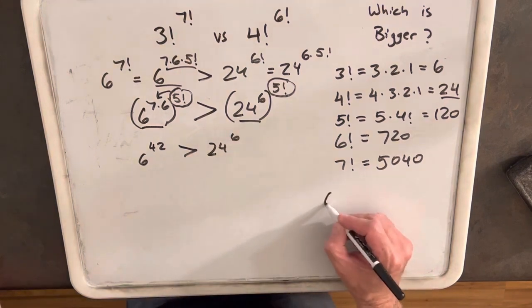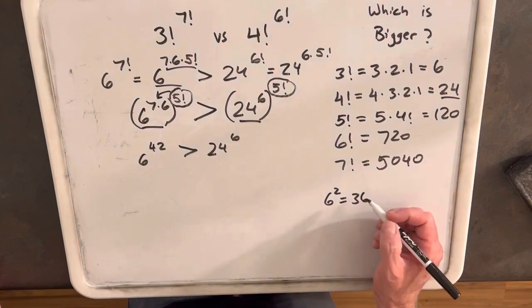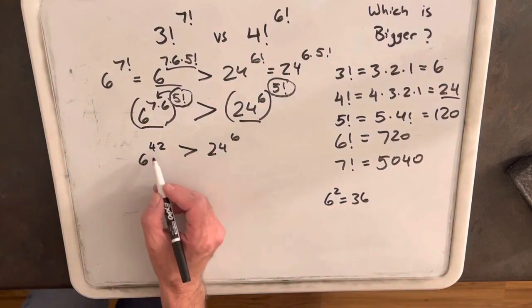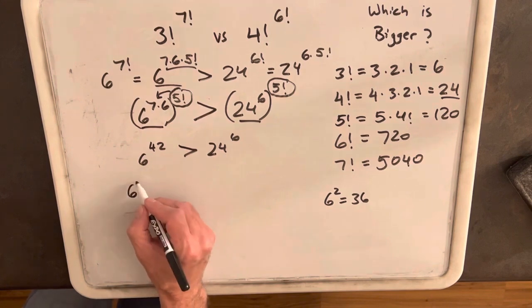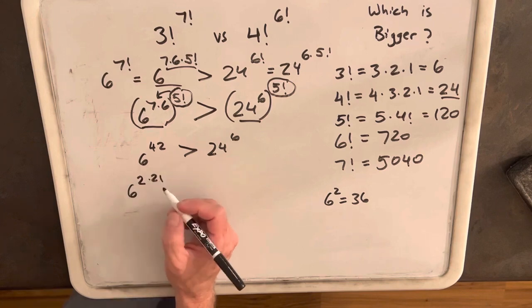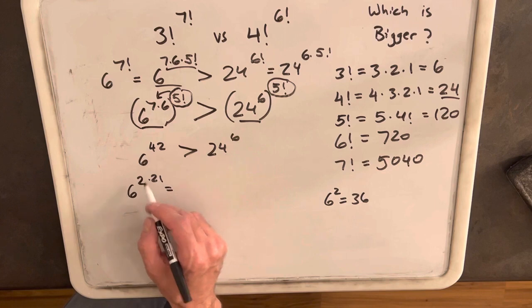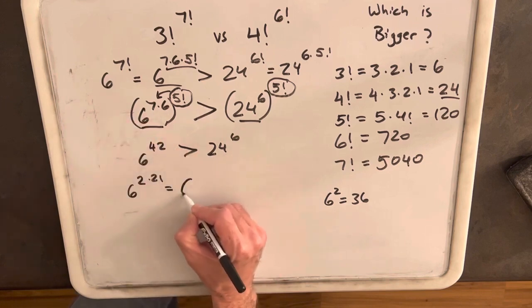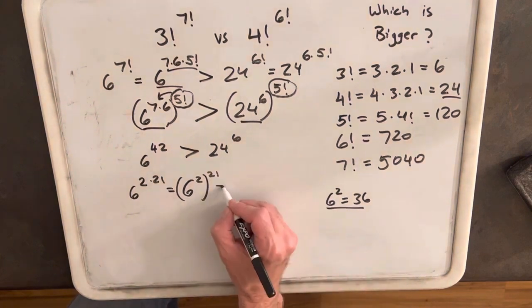Then, just noticing that 6 squared is 36, we can use that. Let's rewrite our 42 here. Let's write the left side as 6 to the 2 times 21 for 42. But then we can use this same trick again, bringing the exponent into the parentheses. So we can write this as 6 squared to the 21st, but 6 squared is just 36. So we'll have 36 to the 21 is greater than 24 to the 6.